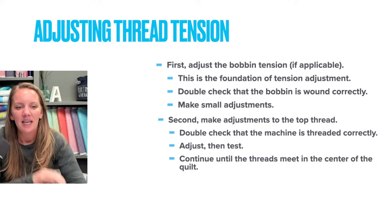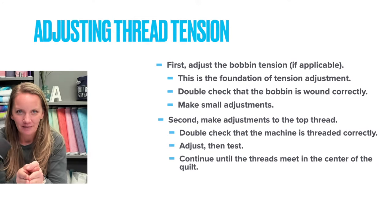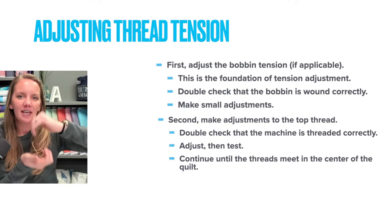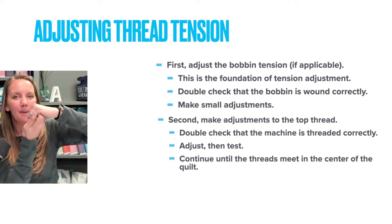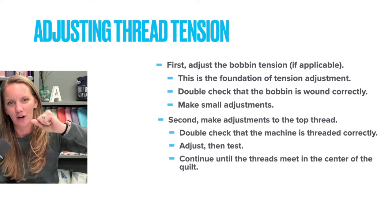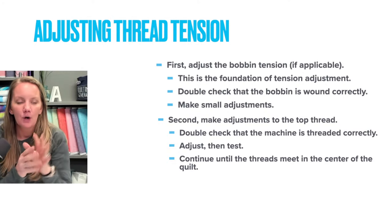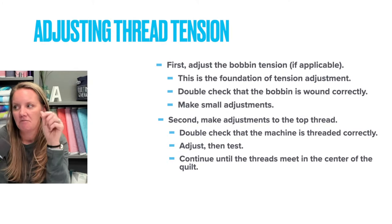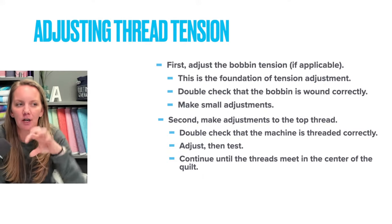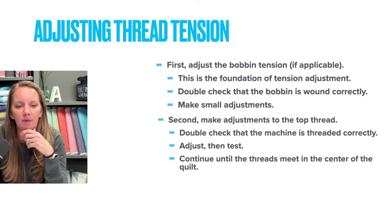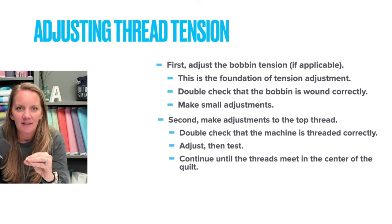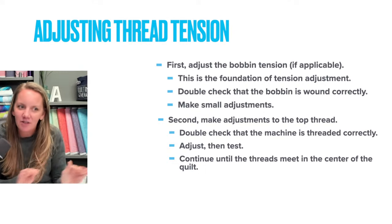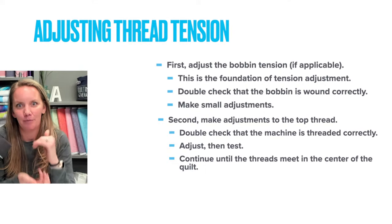The only reason you should change the bobbin tension is because you've changed your bobbin thread. When I was learning I would tighten the top and tighten the bobbin — but for that tug of war it's canceling each other out. By only adjusting one part of that tug of war it's a lot easier to narrow it down. Then when we start making adjustments to the top, we tighten or loosen depending on your machine. Remember: if I'm seeing bobbin thread at the top, my top thread is winning the tug of war so I'm going to loosen it. Adjust, then test — adjust, then test.